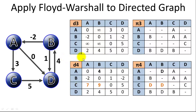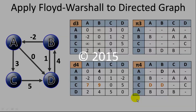That wraps up this example of Floyd-Warshall's algorithm. We've now found the shortest distance from each vertex to every other vertex in the graph, along with the predecessor so we know which route was taken. I hope you liked this video — if so, please give it a thumbs up and subscribe. I'm Joe James, thanks for watching.